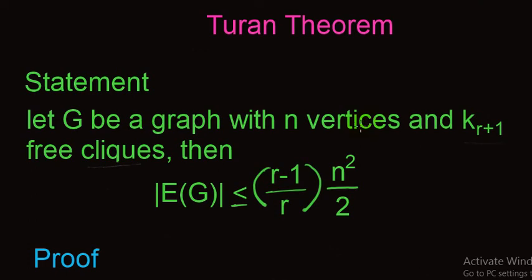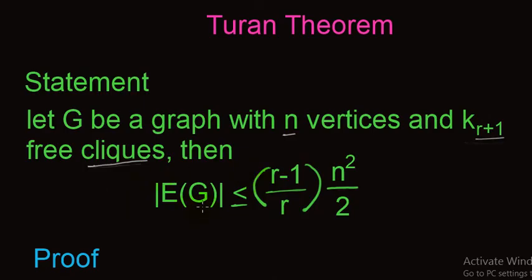Welcome students. In this lecture I shall prove Turán's theorem, which is an important theorem of graph theory. Turán's theorem states that let G be a graph with n vertices and Kr+1-free cliques, then the total number of edges in G is less than or equal to (r−1)/r × n²/2.